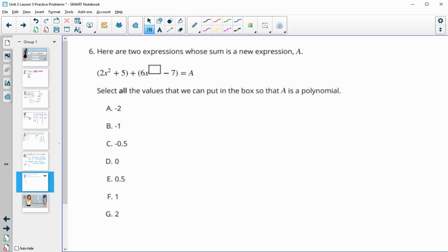Number 6, here are two expressions whose sum is a new expression. Select all values that we can put into the box so that A is a polynomial. So now this one is 6x to this box, so this is an exponent. So we can only have non-negative whole numbers. So we can only have non-negative whole numbers. So it can't be negative 2, it can't be negative 1 because it can't be negative. It can't be negative 0.5 because it's not allowed to be negative or a decimal slash fraction. So 0 would be fine.